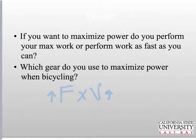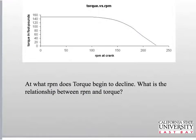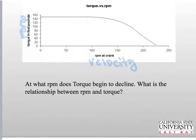Let's look at a practical application. When you're riding a bicycle, which gear do you use to maximize your power? To answer that, let's look at a torque-RPM curve — torque is basically the same as force, and RPMs can be viewed as velocity. At low RPMs, when you're pedaling slower, you have high torque. As you increase RPM and pedal faster and faster, your torque production goes down.